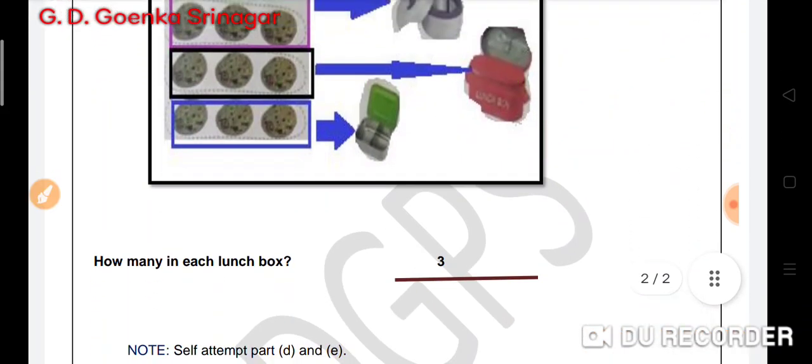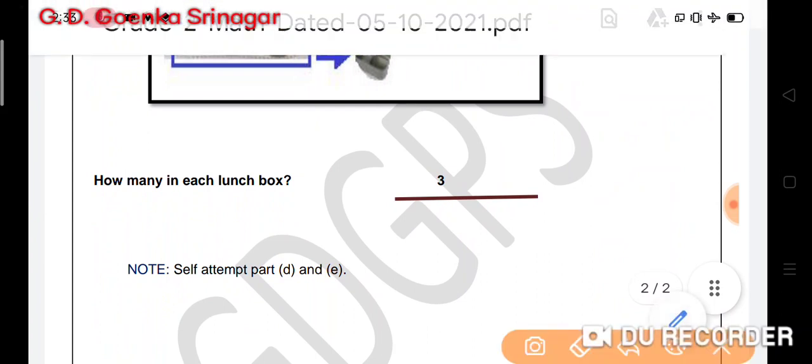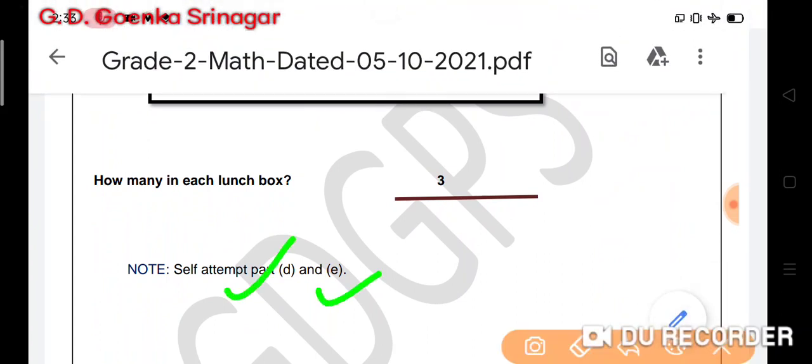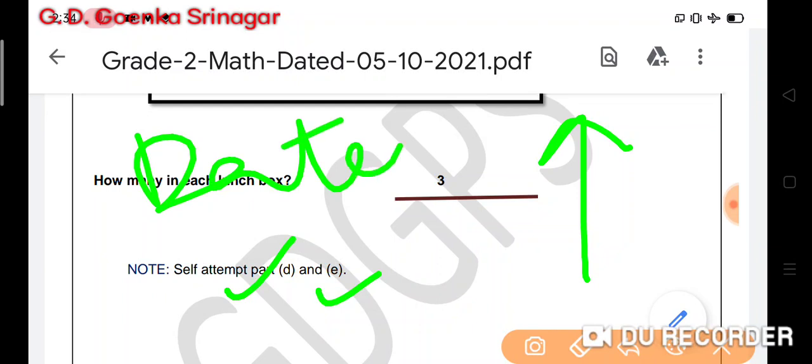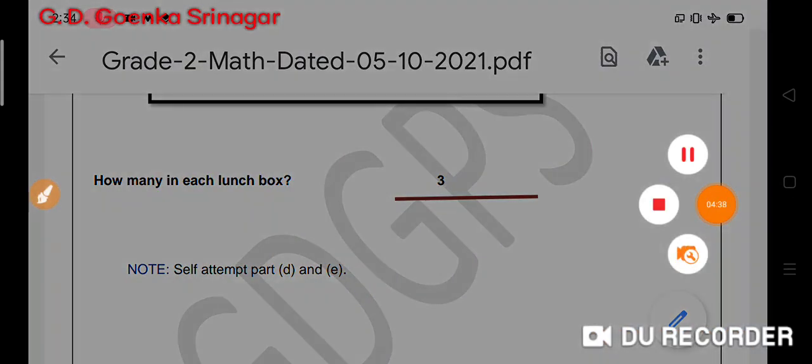Now you will self-attempt your D and E parts. I hope you will do your work neat and clean. Distribute the things equally as I explained here in parts A, B, and C. Do not forget to mention the date on the top. I will get back to you with one more session on division. Till then, stay home and be safe.